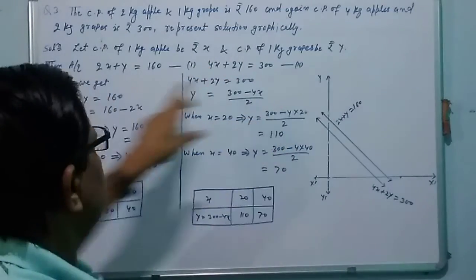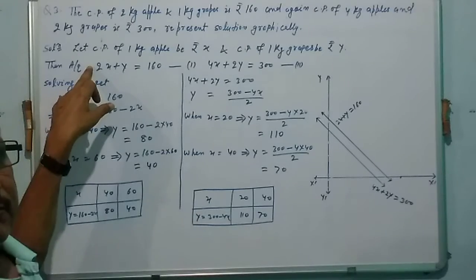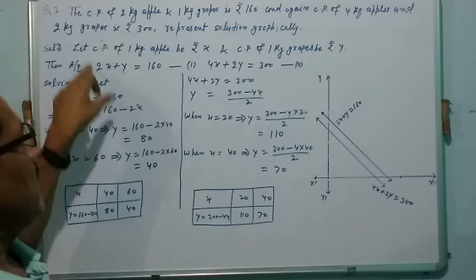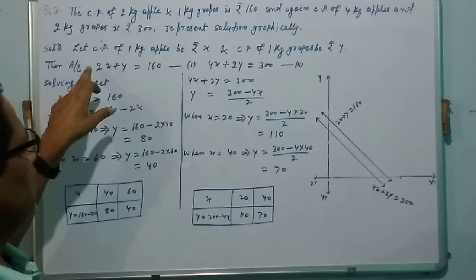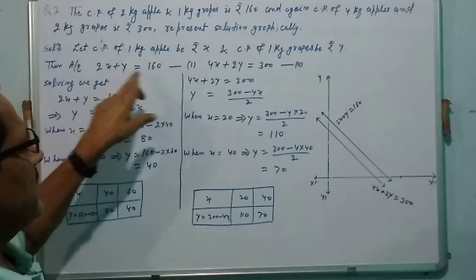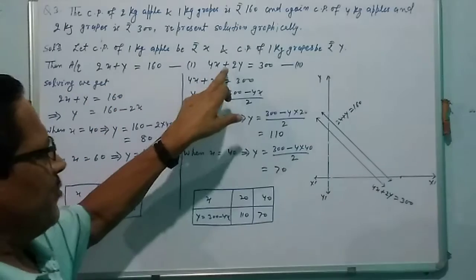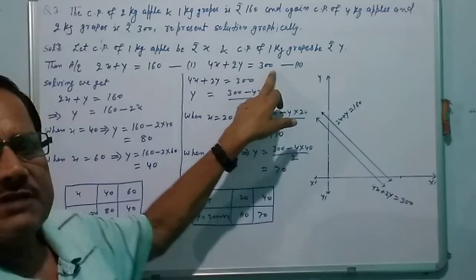Then the equations we form according to the question are 2x plus y equal to 160 and 4x plus 2y equal to 300.